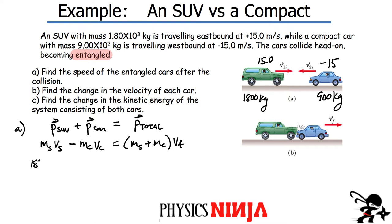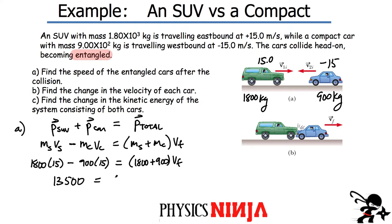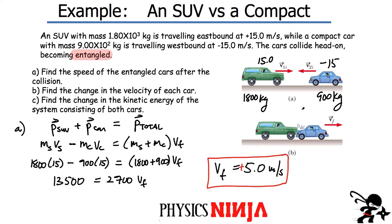Substituting values: 1800 × 15 minus 900 × 15 equals (1800 + 900) × v_final. The left side gives 13,500 and the total mass is 2700, so v_final = 5.0 meters per second. The positive value means the combined mass is moving in the same direction the SUV was originally moving — because the SUV had more momentum than the car before the collision.